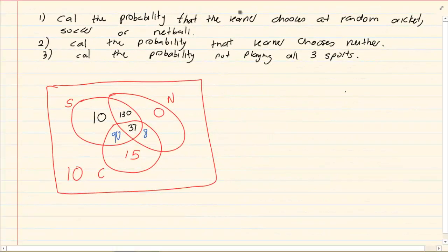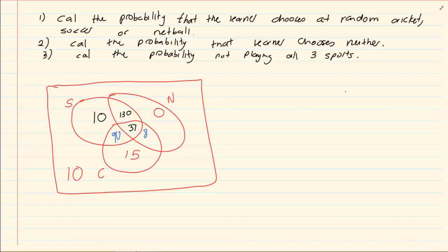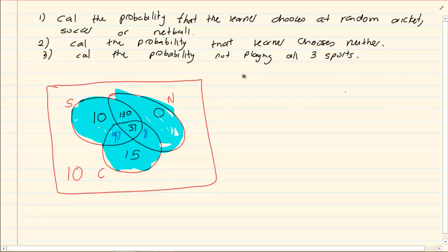Right, if you look, they say calculate the probability that a learner chooses at random cricket, soccer or netball. Now that means I could take any one of them. I could take the entire or means I am taking all three. So in order to get that, if I have to say the probability of the learner choosing at random soccer, cricket or netball, then I have to say, okay, so I want the probability of soccer or cricket or netball. Which is equal to, now I have to take every one, 10 plus my 130 plus my 37 plus my 90 plus my 8 plus my 15. Now if you total that, you are going to get 290 and we know probability has to be over 300.